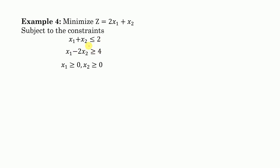First, we will convert these inequalities into equations and plot them in a two-dimensional plane. The first line is x1 + x2 = 2. Suppose we have a two-dimensional plane with axes x1 and x2.